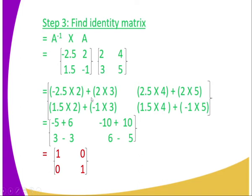Continuing: 1.5 × 4 = 6, and −1 × 5 = −5. Now adding the products: −5 + 6 = 1; −10 + 10 = 0; 3 + (−3) = 0; and 6 + (−5) = 1. The resulting matrix has first row [1, 0] and second row [0, 1].